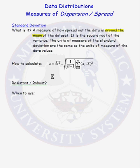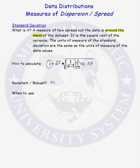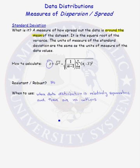The sample standard deviation, designated by s, is calculated by first computing the sample variance and then taking the square root. Is the sample standard deviation a resistant statistic? The answer is no. If the sample variance is not resistant, then the sample standard deviation cannot be resistant either. The sample standard deviation can be used under the same conditions as sample variance — that is, when the data distribution is relatively symmetric and there are no outliers.